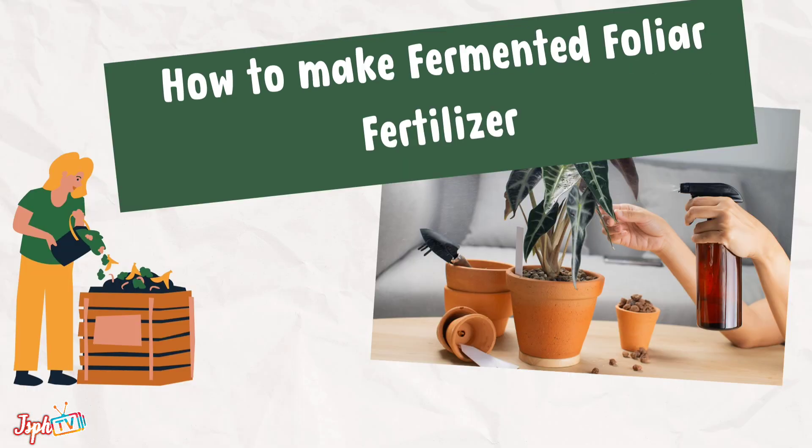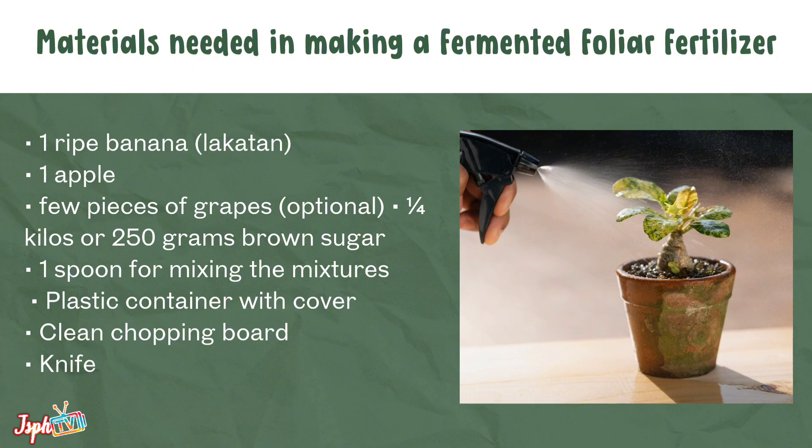How to make fermented foliar fertilizer. The materials needed are: one ripe banana, one apple, a few pieces of grapes, one-quarter kilo or 250 grams of brown sugar, one spoon for mixing, a plastic container with cover, a clean chopping board, and a knife.